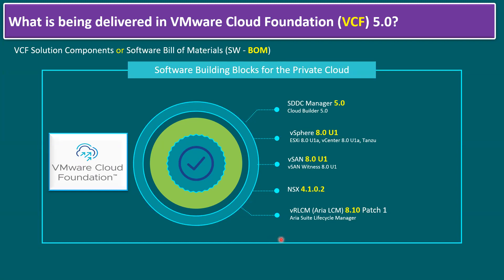When we say ARIA Suite comes with VCF, it covers ARIA Operations (formerly vRealize Operations Manager — mainly for monitoring, reporting, and capacity planning), ARIA Automation (formerly vRealize Automation — mainly to automate Day 0, Day 1, and Day 2 activities), ARIA Operations for Logs (formerly vRealize Log Insight — to centrally manage logs for all VMware products including vSphere, vSAN, NSX, and Tanzu), and ARIA Operations for Networks (formerly vRealize Network Insight).